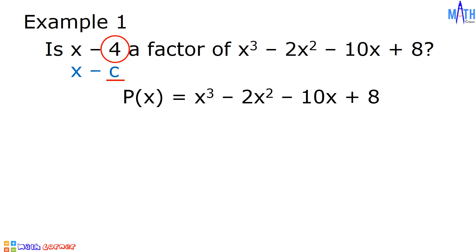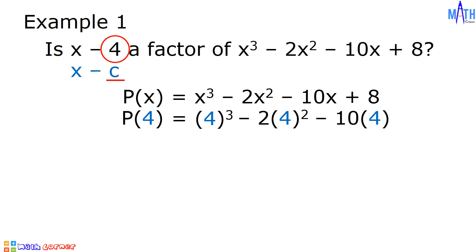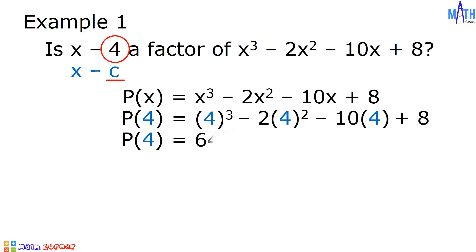Let us substitute 4 for x in this equation. p of 4 equals 4 cubed minus 2 times 4 squared minus 10 times 4 plus 8. Let us simplify. We have p of 4 equals 4 cubed, or 4 times 4 times 4, which is equal to 64. Next, 4 squared, or 4 times 4, is equal to 16. 16 times negative 2 is equal to negative 32.